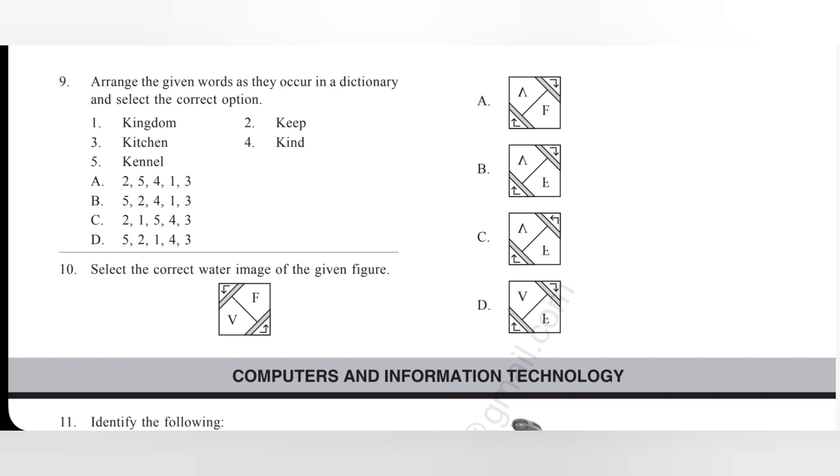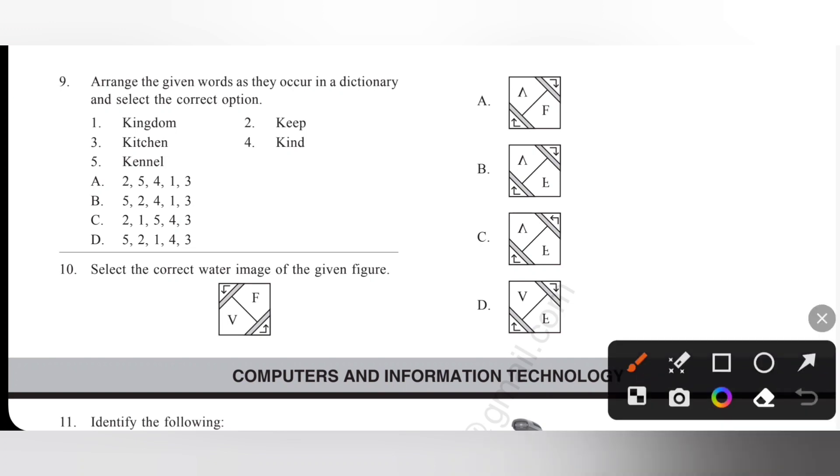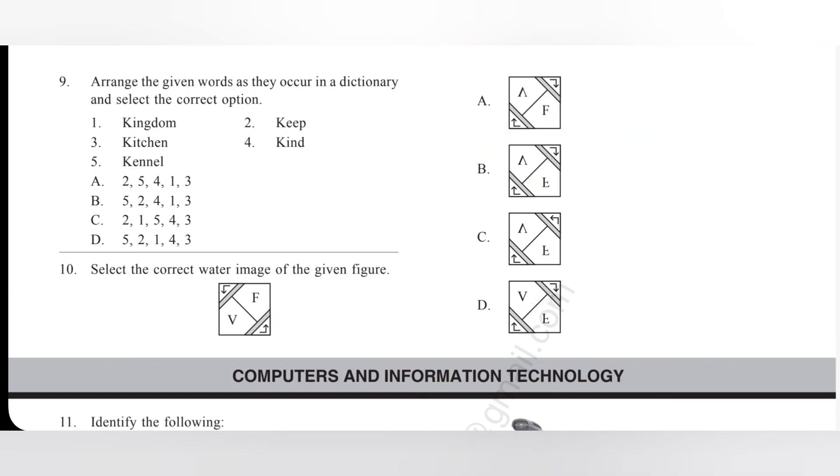Tenth one, select the correct water image of the given figure. Please pause the video and try to find the answer. Here this F is not a correct water image, so it is wrong. Option A and D are wrong. Either option B or C will be the correct answer. Yes, V and then F. Option B is the correct answer.